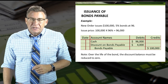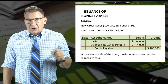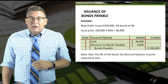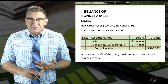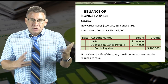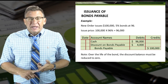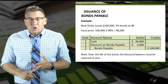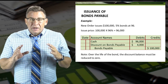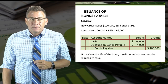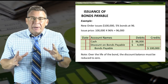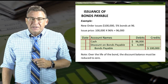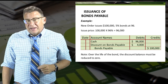A better example might look like this: New Order issues $100,000, 5% bonds at 96. The issue price is $100,000 times 96%, which equals $96,000. So we debit cash for $96,000, debit Discount on Bonds Payable for $4,000, and credit bonds payable for $100,000. Then over the life of the bond, the discount balance would be reduced to zero. We call this process amortizing the discount, and you'll learn more about that in an upcoming video.